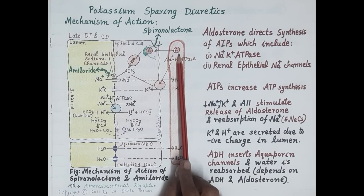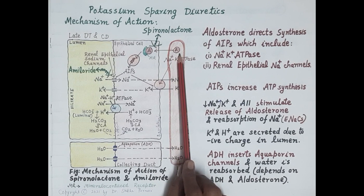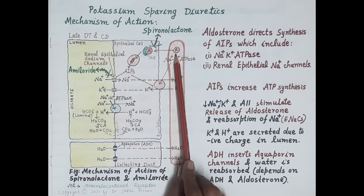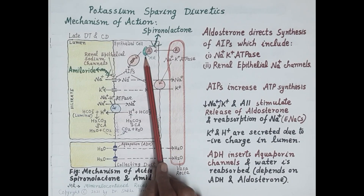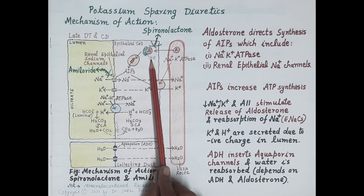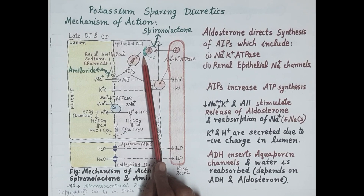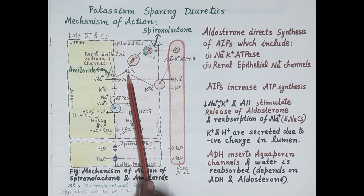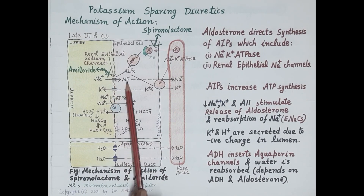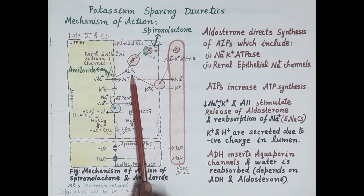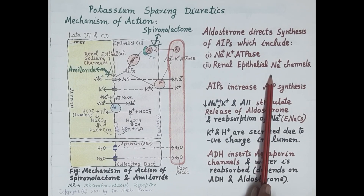Aldosterone, shown in red and represented as capital A, regulates reabsorption of sodium in the distal convoluted tubule and collecting duct. A fall in blood sodium, a rise in blood potassium, and angiotensin II all stimulate release of the steroidal hormone aldosterone. Aldosterone moves from the blood into the cells of the distal convoluted tubule and collecting duct, where it combines with the mineralocorticoid receptor (shown in green as MR) and induces synthesis of aldosterone-induced proteins: the sodium-potassium ATPase pump and the renal epithelial sodium channels.